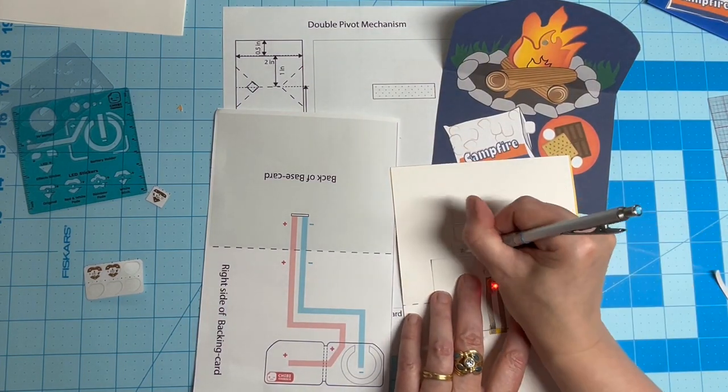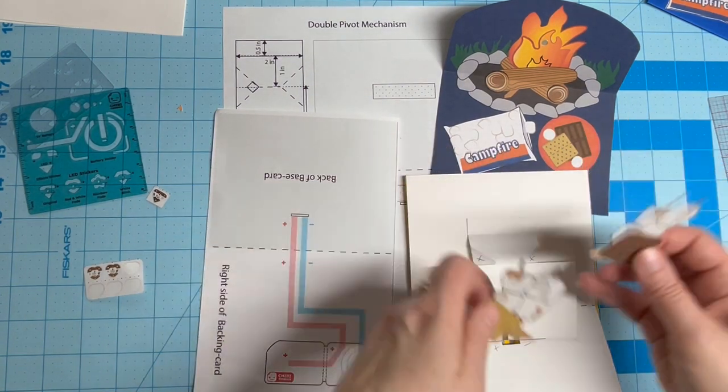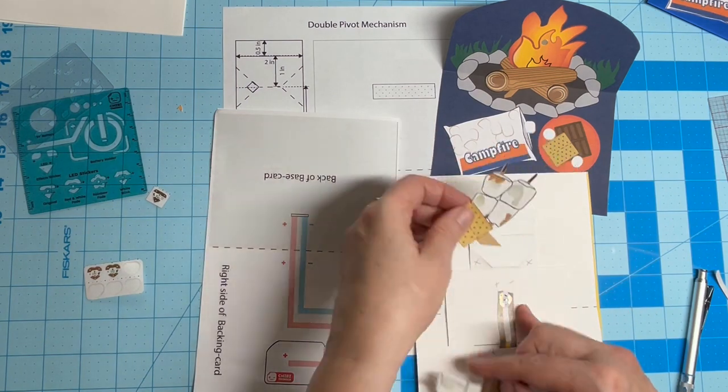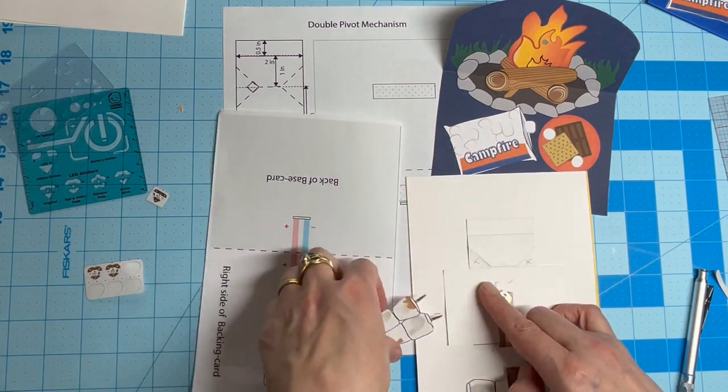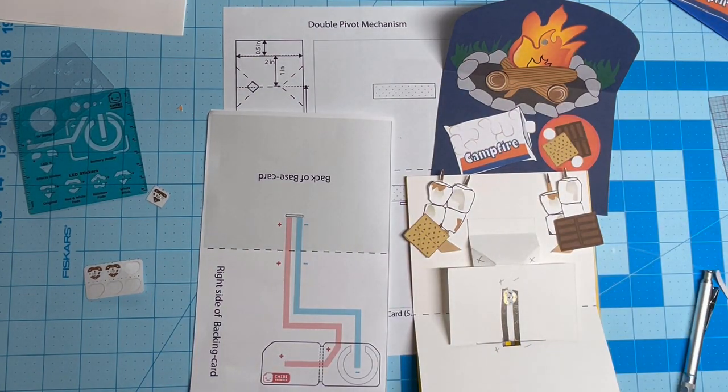Now that your circuit is complete, it's time to finish building the pop-up mechanism. Using an adhesive of your choice, adhere the arms to the topmost angles marked with an X. Line them up so that the bottoms of the arms are parallel with the base of those angles.